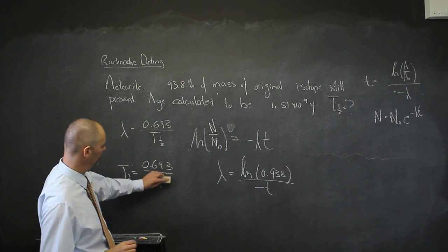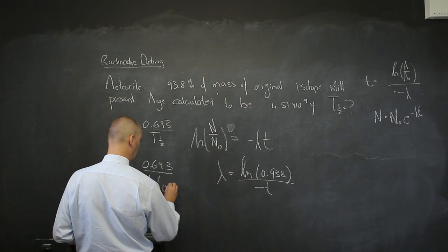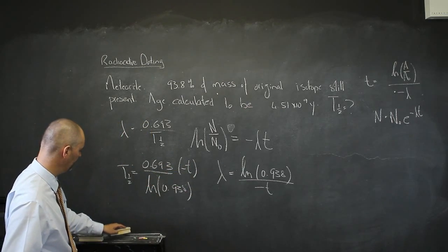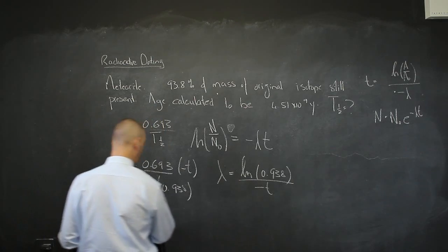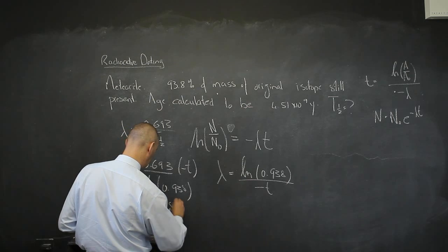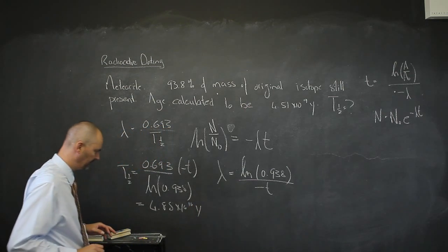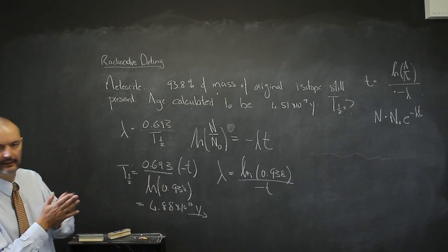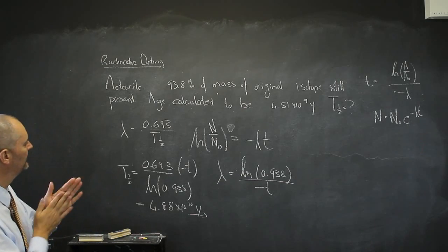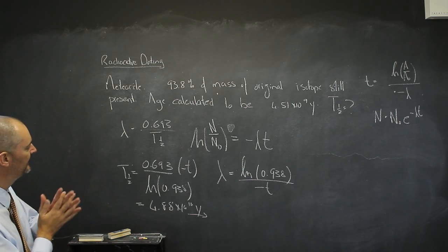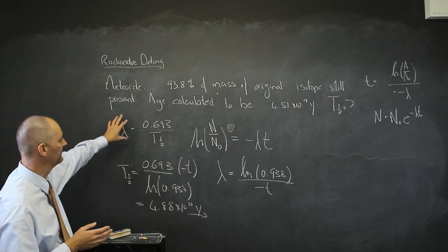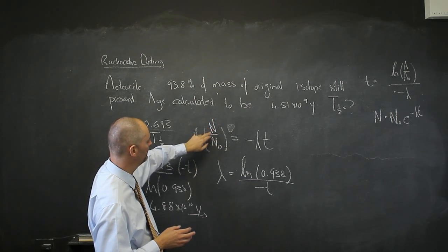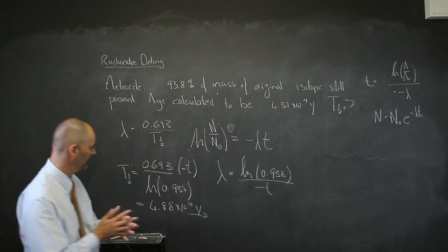I can put that in for my λ, which makes this the natural log of 0.938 times minus t. This is a fraction. This is going to be negative, canceling the negative up there, and that gives me a half-life of 4.88 times 10^10 years. So it's a simple algebra problem. Do you know your equations? Can you play around with them to give you the half-life, knowing that the half-life has something to do with the decay constant, knowing that the decay constant has something to do with the ratio of the amount you have now divided by what it was?